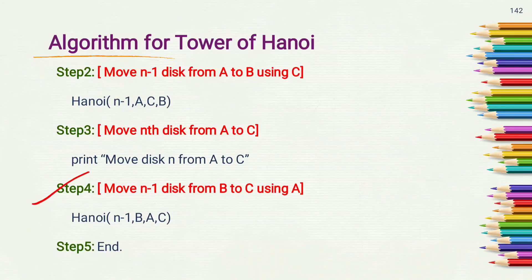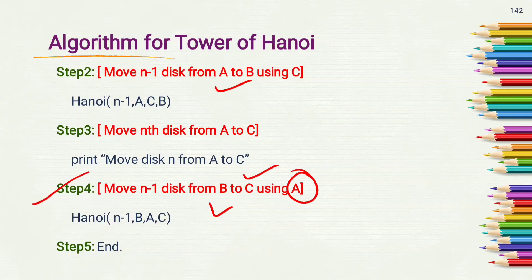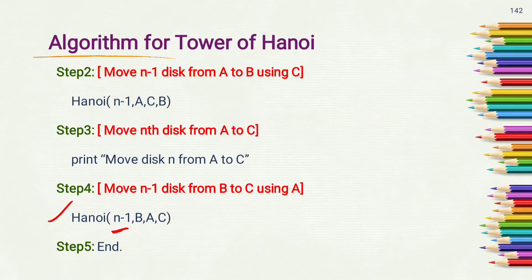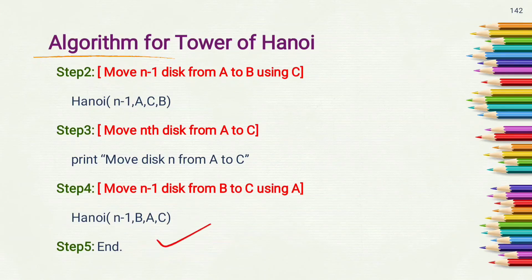Step four: move n minus one disks from B to C using A as the intermediate tower. We call the algorithm recursively as Hanoi(n-1, B, A, C) — source is B, intermediate is A, destination is C.